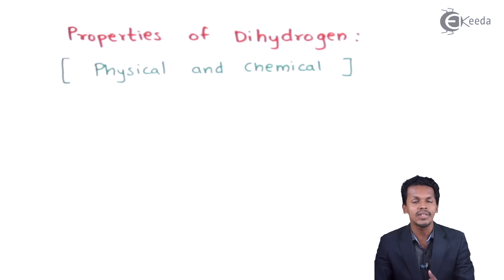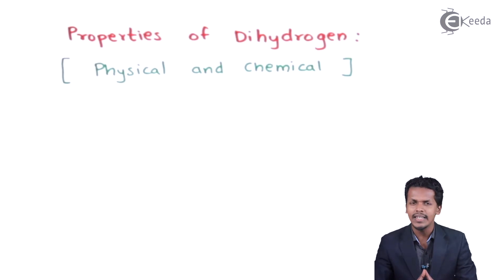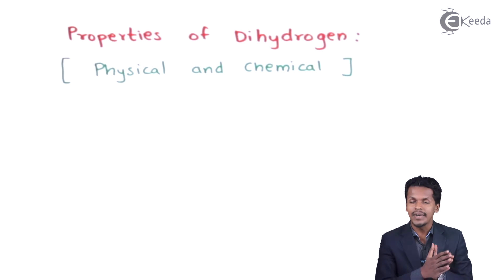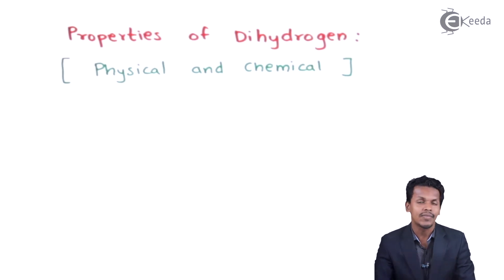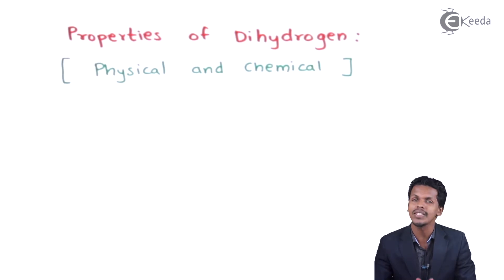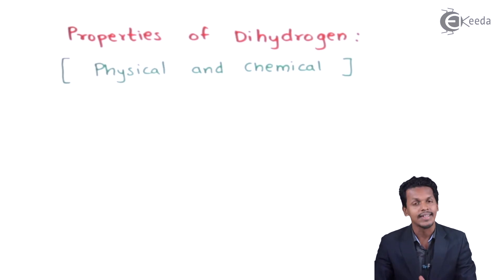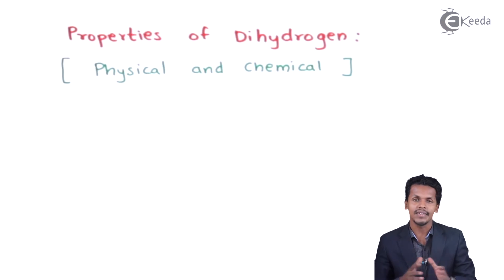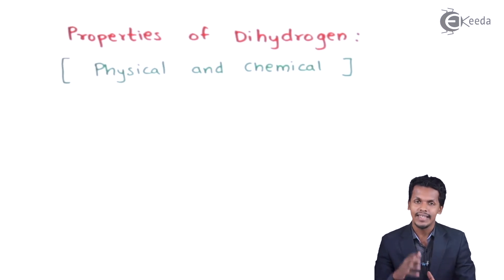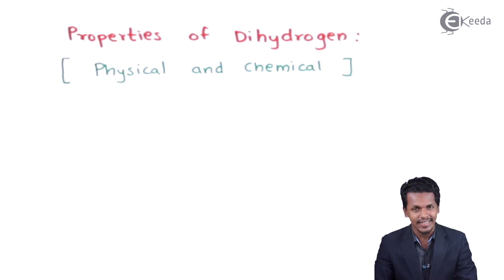It has been found that hydrogen is very much reactive with halogen molecules. The reason is that hydrogen needs to complete its octet or convert into a stable electronic configuration. Halogen molecules also need electrons to get a stable electronic configuration, and that's the reason they are very much reactive to each other. The chemical reactivity of hydrogen is comparatively different from that of other gases.